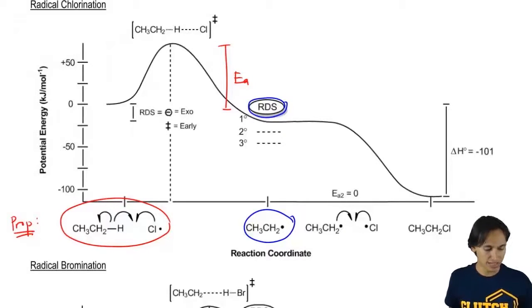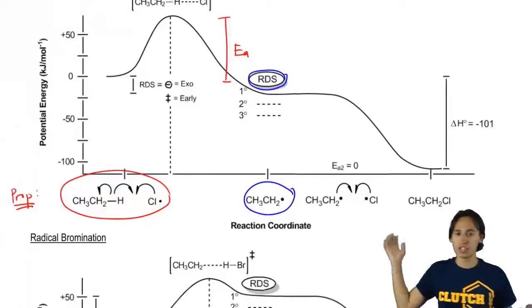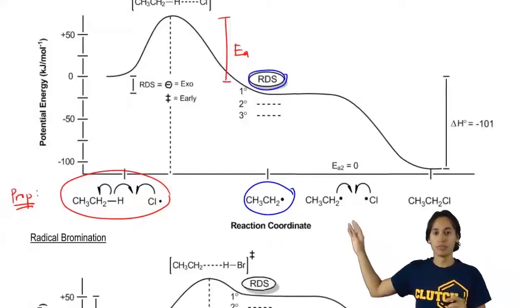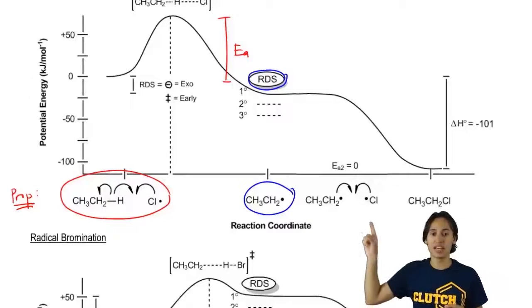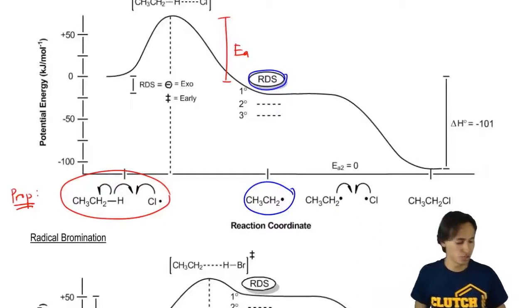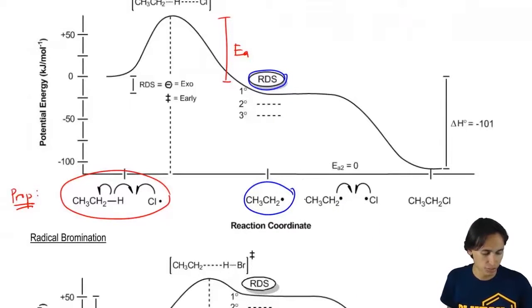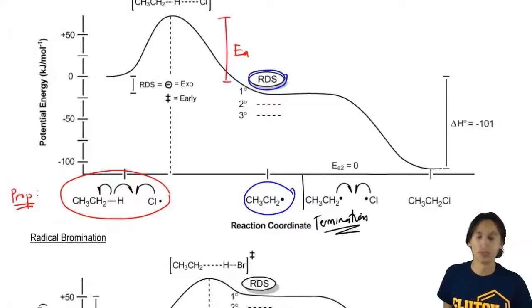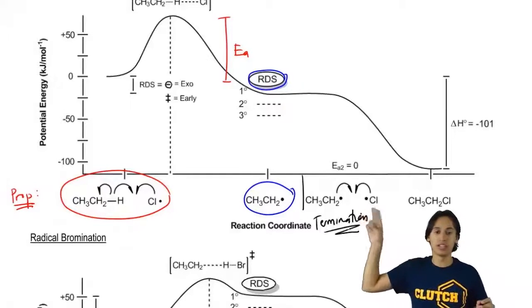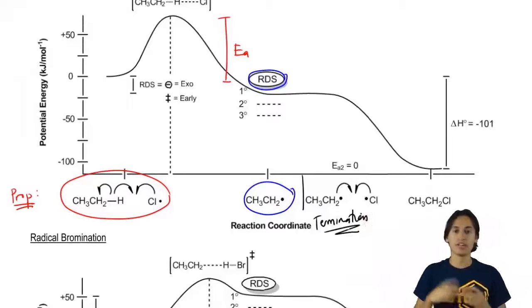Then what happens in the next part of my reaction diagram? There's like a story. Remember my propagation phase isn't done yet. I need to react my – well, in this case this would be a termination step here. So let me just say this will be termination. And in my termination step, what I get is two radicals colliding to make a new single bond.